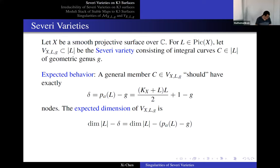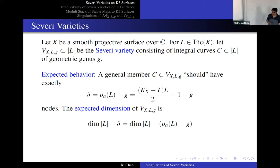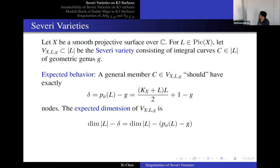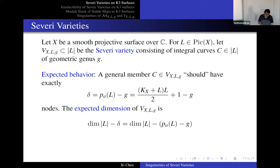Obviously this will fail in many cases, especially when X is of general type. That's the very classical object — it's called the Severi variety.